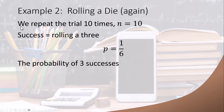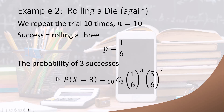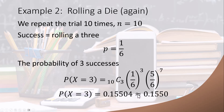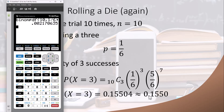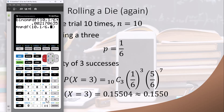Let's move on to another example: still rolling a die 10 times with success defined as rolling a three, but now we want to know the probability of exactly three successes. By hand, that's 10 C 3 times (1/6) to the third power times (5/6) to the seventh power, which gives 0.15504, rounding to 0.1550. Using the calculator, pull up binompdf from history, keep n equals 10 and p equals 1/6, but change x to 3. You get the same rounded value.